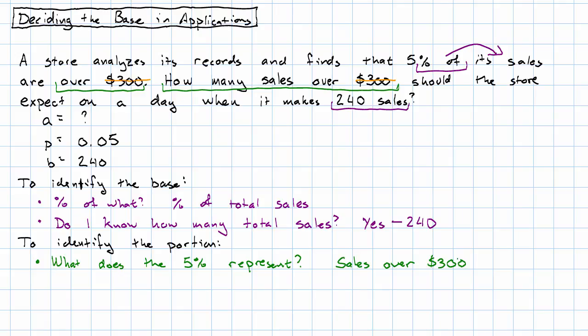The main idea of this story is that it's telling me, of all the store's sales, some of them are over $300. And then we look through the problem and say, do I know how many sales are over $300? And it turns out that no, I don't. That's what I want to find.